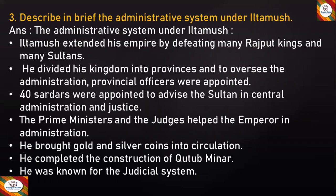Iltutmish extended his empire by defeating many Rajput kings and sultans. He divided his kingdom into provinces and appointed provincial officers to oversee administration. Forty sardars were appointed to advise the sultan in central administration and justice. The prime ministers and judges helped the emperor in administration. He brought gold and silver coins into circulation, completed the construction of Qutub Minar, and was known for his judicial system.